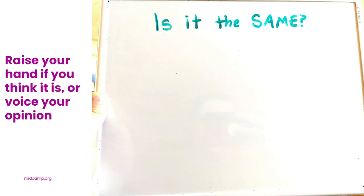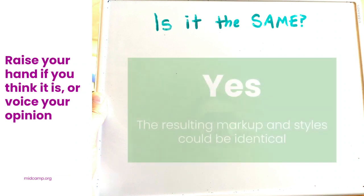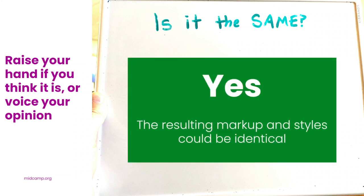We're back from commercial break and starting round two — is it the same? Since the component is an abstraction layer and the details tag prints to the screen, the browser and users see that the React component is identical to the earlier Twig one.